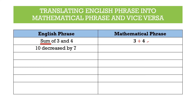For example 2, we have "ten decreased by seven." Our clue phrase is "decreased by," which is under the operation subtraction, so we write that as 10 − 7.